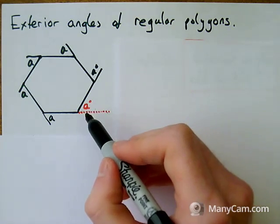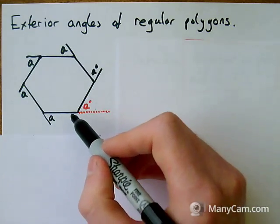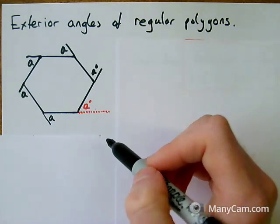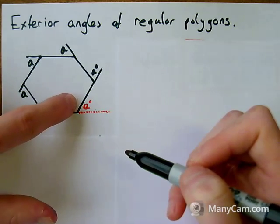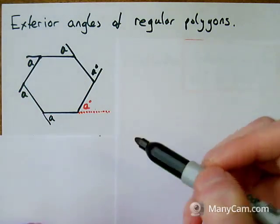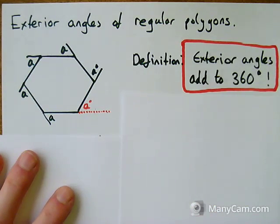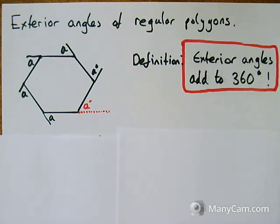There's a rule about the total amount of all of the exterior angles of any regular polygon. So if I had all six of these sides added together, the definition is that they all add to 360.